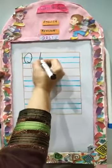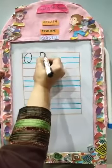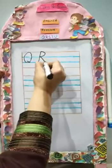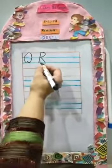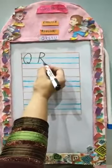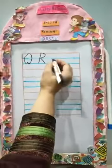R. The sound of R is 'R' and R is for Rain.